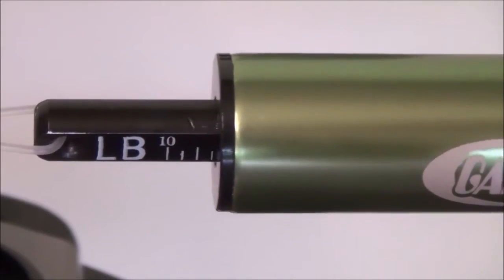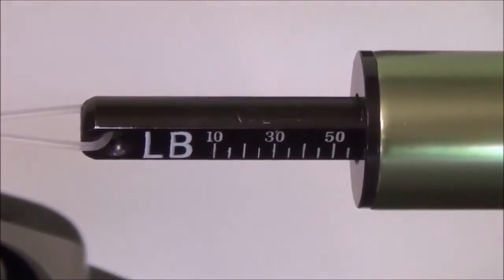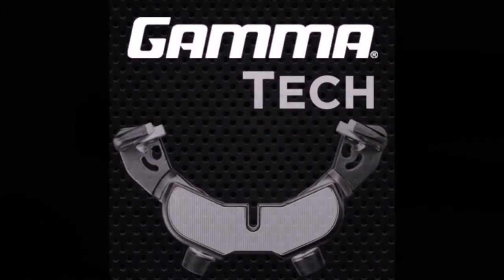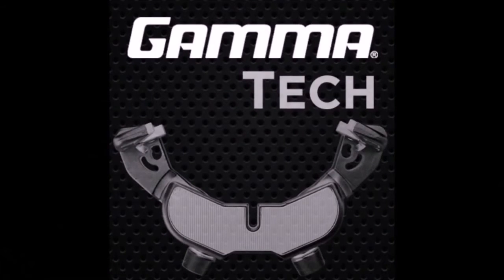To verify accuracy, pull tension and compare the set tension to the reading on the calibrator. Don't forget to tighten the 1.5mm locking set screw to lock the adjustment screw in place.